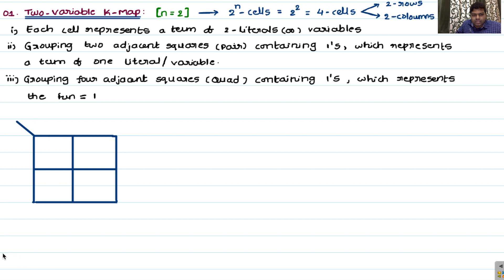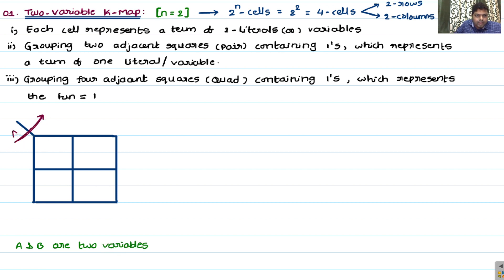Two variables means we take A and B as our two variables. I'll assign A along one direction and B along the other — so this entire top will represent B, and this entire side will represent A.